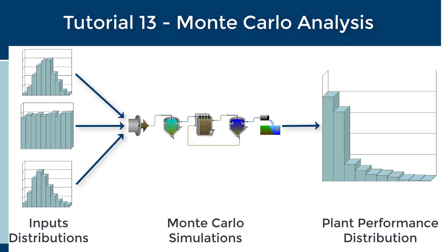It can determine at what value an event will occur and the probability associated with each value. For example, the alpha value for wastewater should be between 0.4 and 0.7. The probability of alpha being any value in this range is uniform. By assigning probability to the range of values, we can use Monte Carlo analysis to investigate the plant's performance over the range and the probability of the observed performance characteristics.